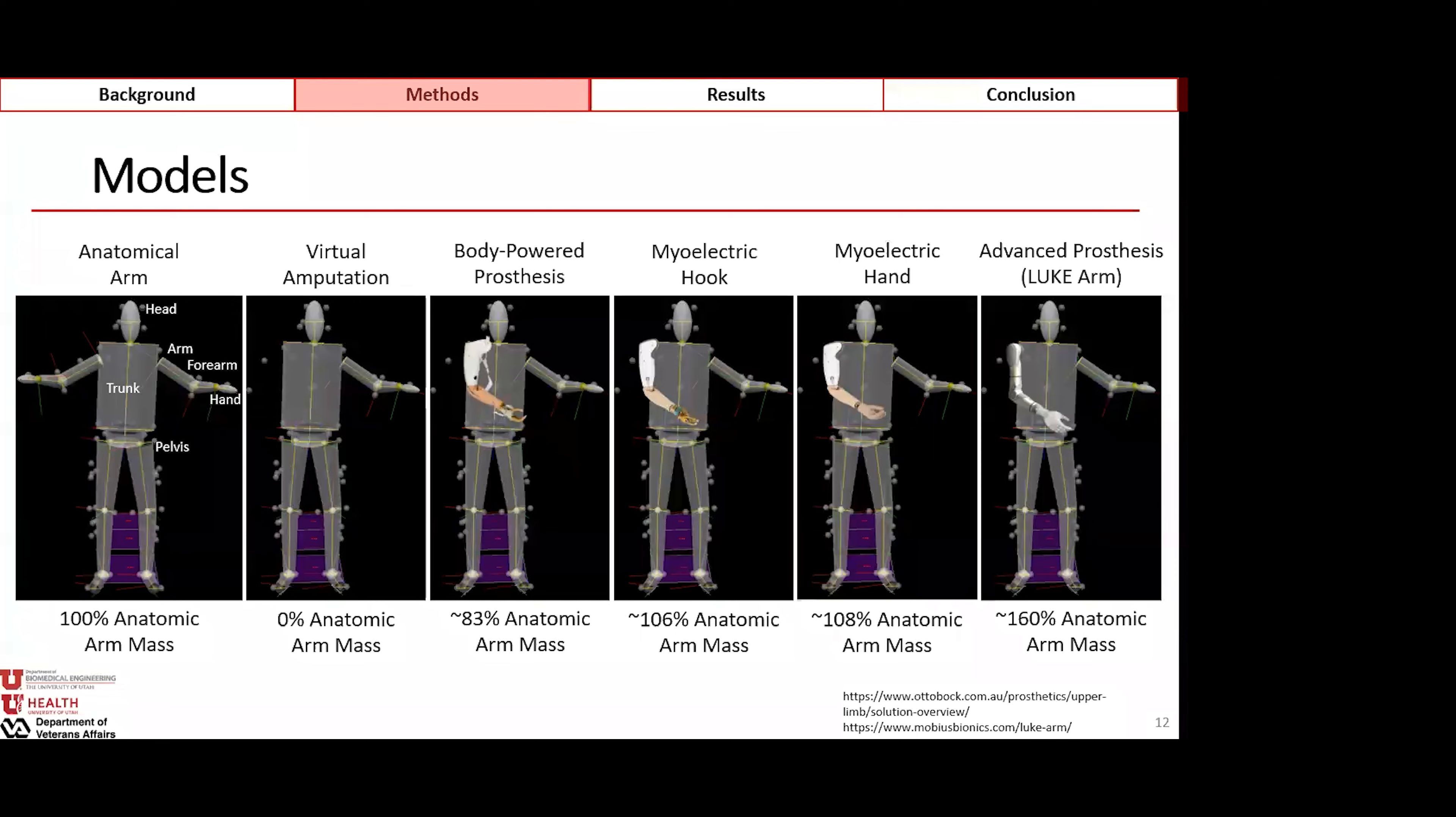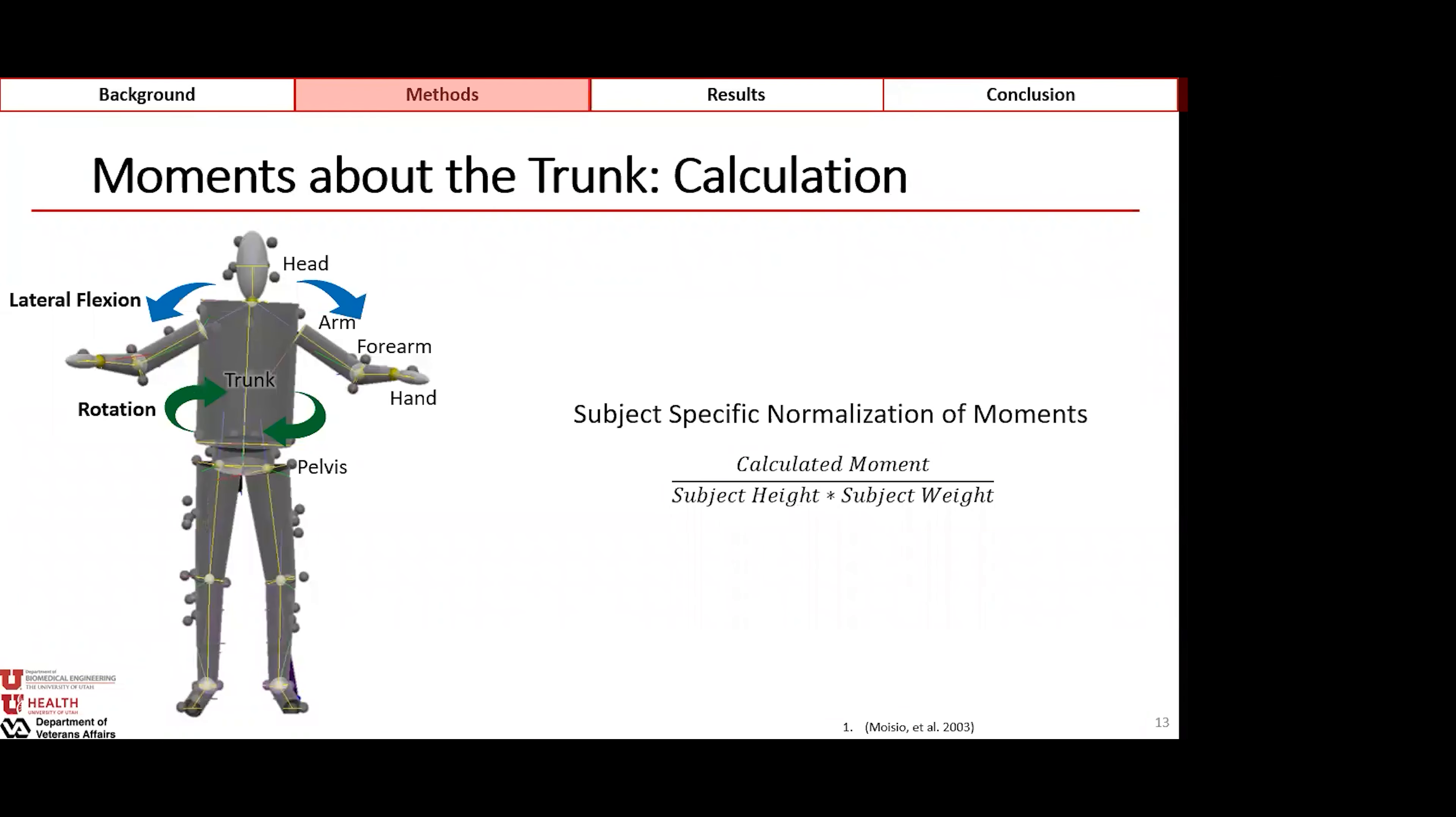With these models, we can then calculate moments about the trunk in Visual 3D. The two moments we'll be speaking about today are lateral flexion, which will always be represented in blue in this presentation, and rotation, which will always be represented in green. These are both moments of the trunk with respect to the pelvis. Once these moments are calculated, we normalize them using subject specific normalization moments, which is the calculated moment divided by the subject height and weight to account for changes in gender.